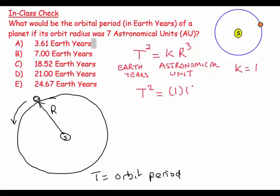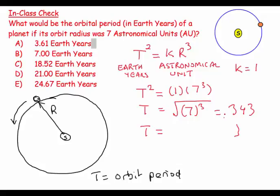T equals the square root of seven cubed. Seven cubed equals 343, so I want the square root of 343, which equals approximately 18.5 Earth years.